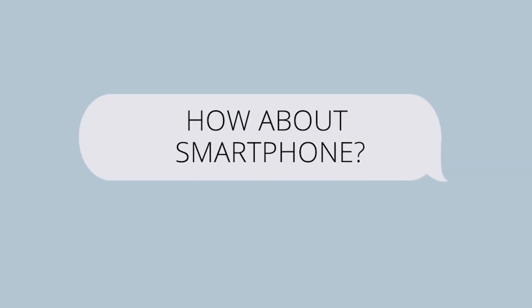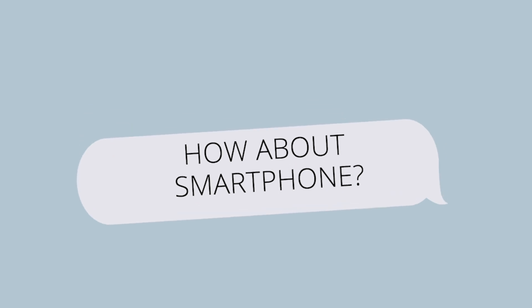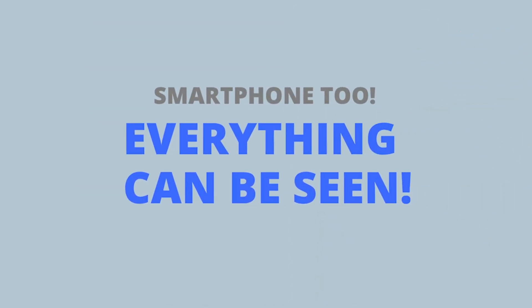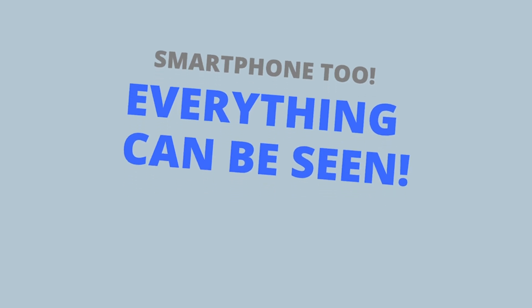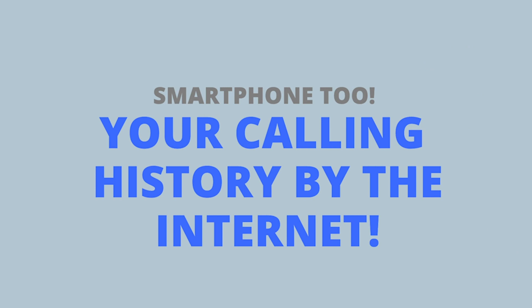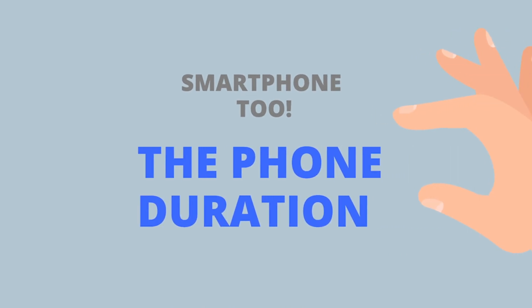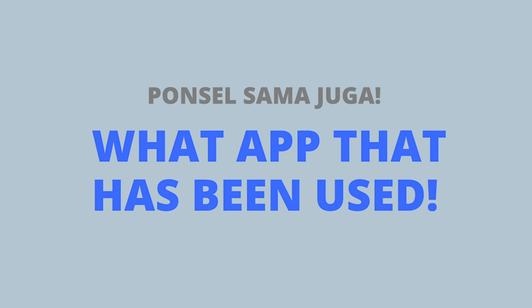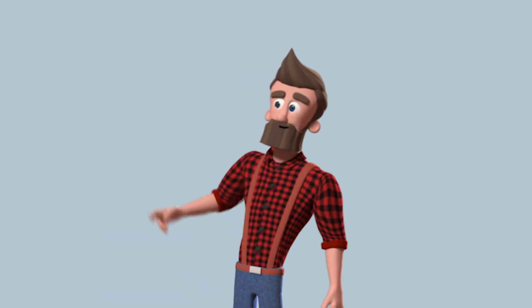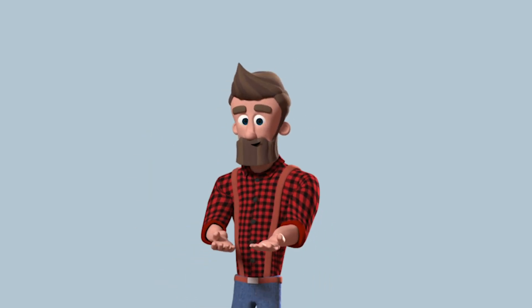What if you're mostly using a smartphone instead of a computer? Should you be worried? Yes — smartphone too, everything can be seen. Don't be naive, because smartphones are just like computers. The WiFi admin can see your calling history on the internet, the duration of your calls on WhatsApp or other apps, and even which apps have been used on your phone — like Tinder, Instagram, or Facebook.